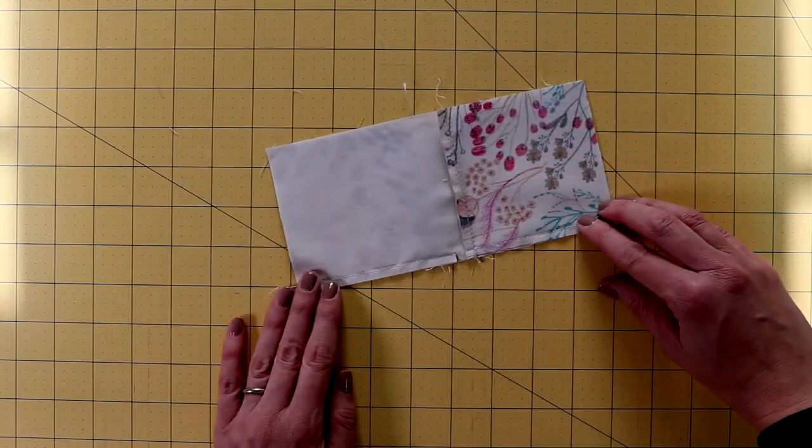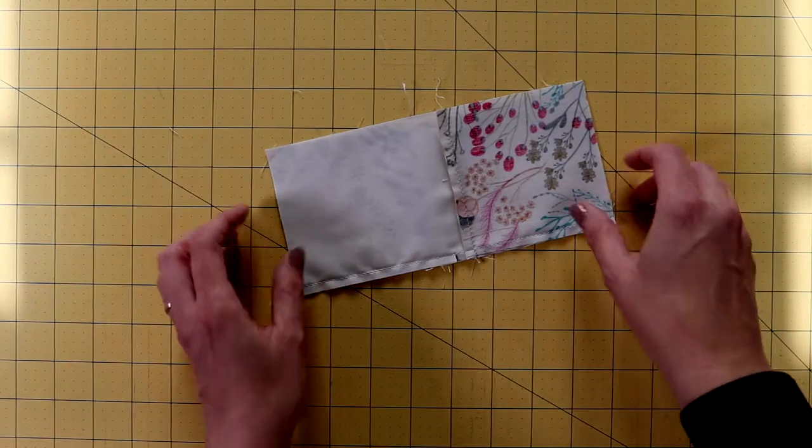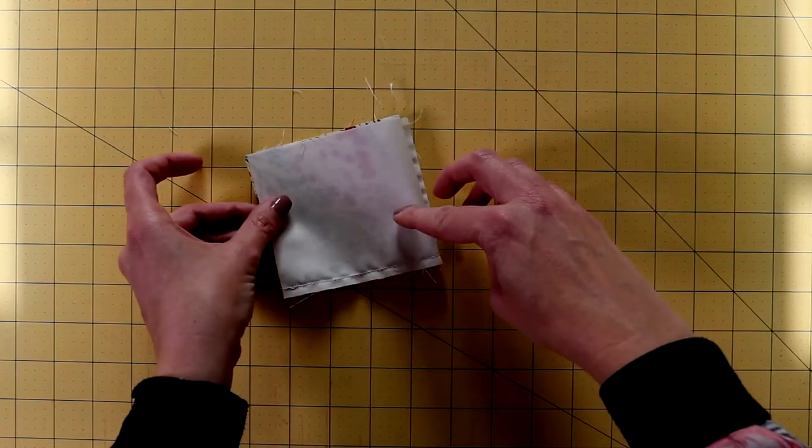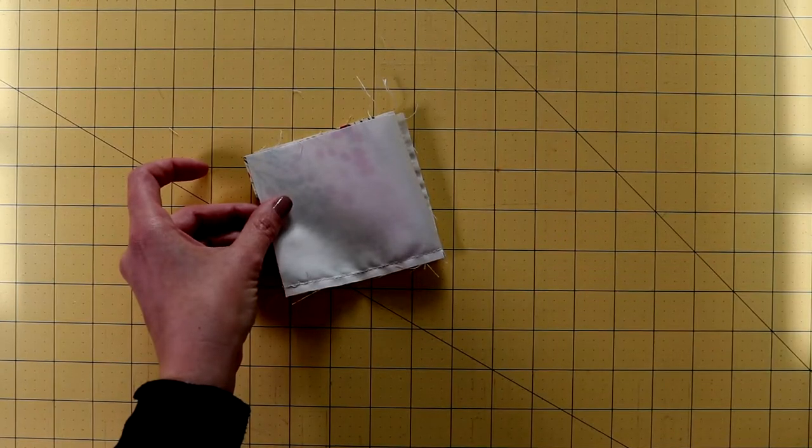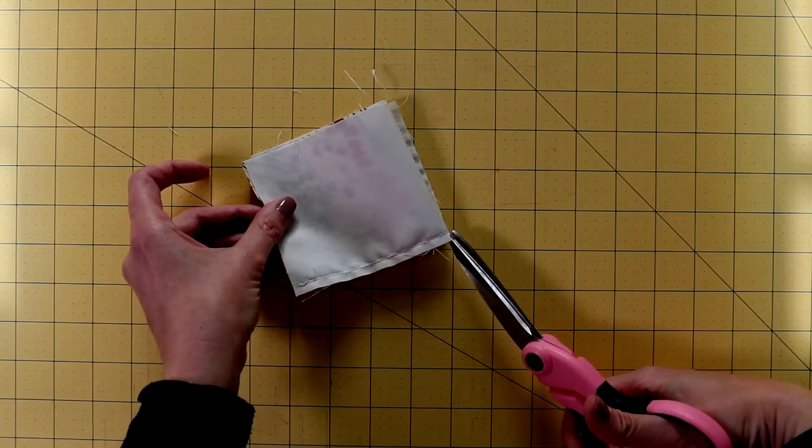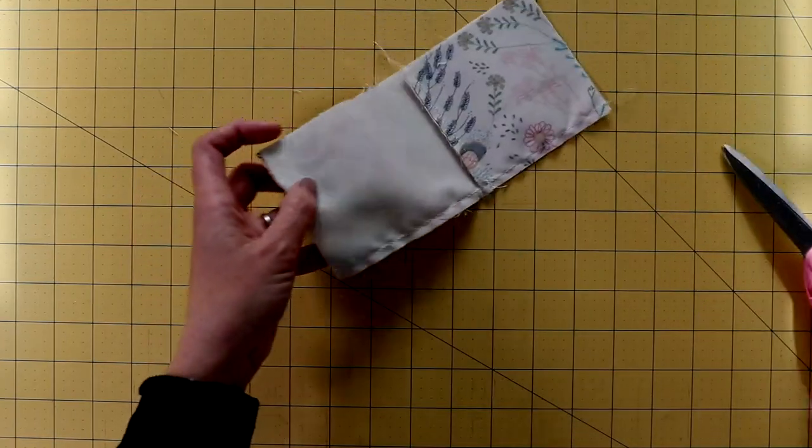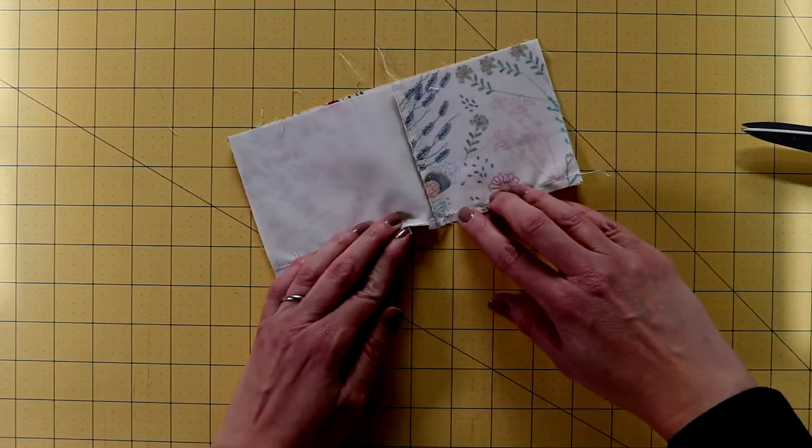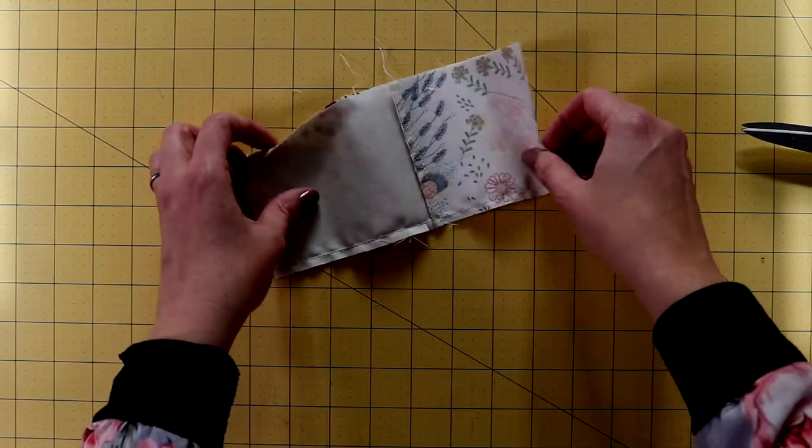Now before we go and press the seams open, we're going to find the middle point of it just by folding in half. Then we're going to make a small clip all the way up to the sewing line. So I've already pre-clipped this. Do that because then your seams will fold the right way.